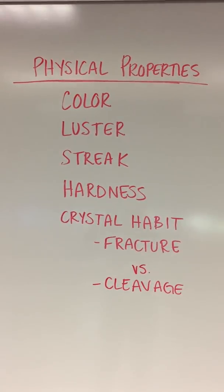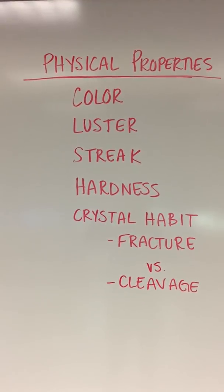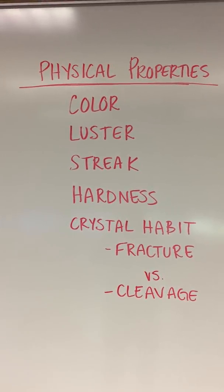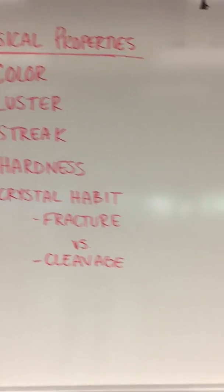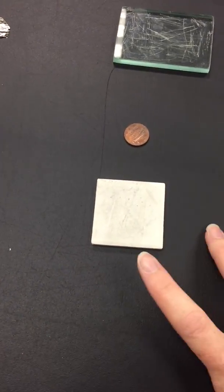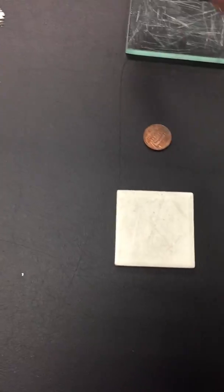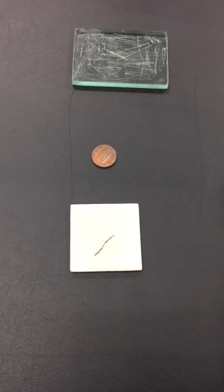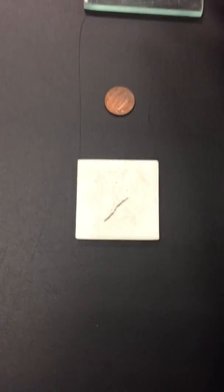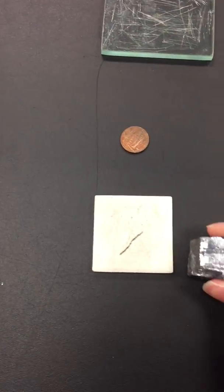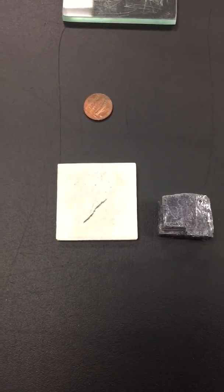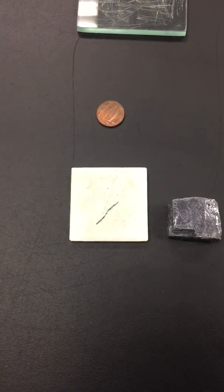Color is pretty self-explanatory. Luster — if it looks like metal, it reflects the light very highly. Streak color is determined using a ceramic plate. You would take the mineral and scrape it along the ceramic plate and see what color that mineral is once it's powdered. For this mineral, which happens to be metallic in its luster, it leaves behind a dark gray, almost black streak color.